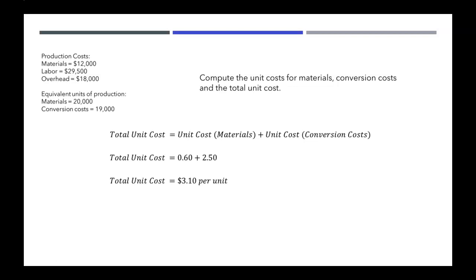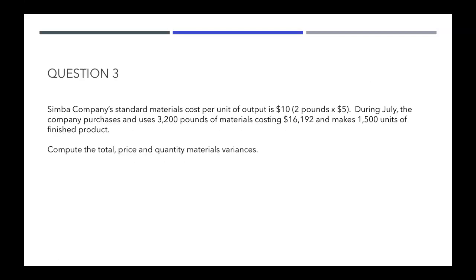We figure out unit cost amounts by taking production costs and dividing by equivalent units of production. For question number three: Simba Company's standard materials cost per unit of output is $10. They expect each unit to use two pounds of materials, and each pound they expect will cost $5 — that's where the $10 comes from: two pounds times $5. During July, the company purchases and uses 3,200 pounds of materials costing $16,192, while making 1,500 units of finished product.